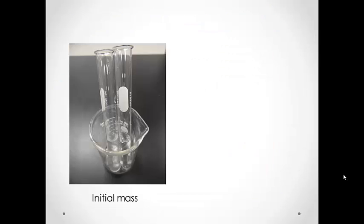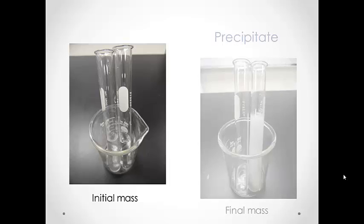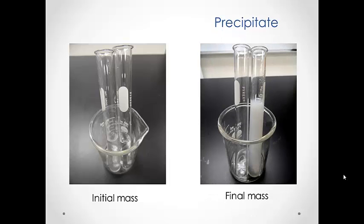You will need two small test tubes and a small beaker to hold them upright. Fill one test tube about one-fourth full of sodium carbonate, and the other test tube about one-fourth full of calcium nitrate. This is what you will need as the initial mass. Then mix those two liquids together.